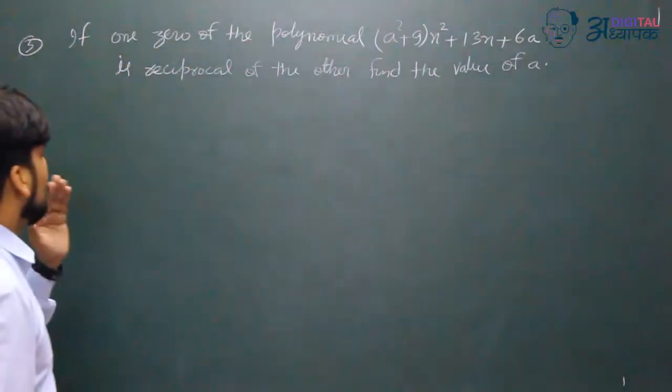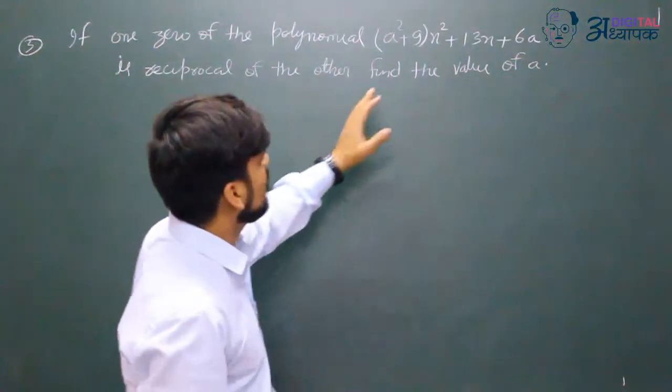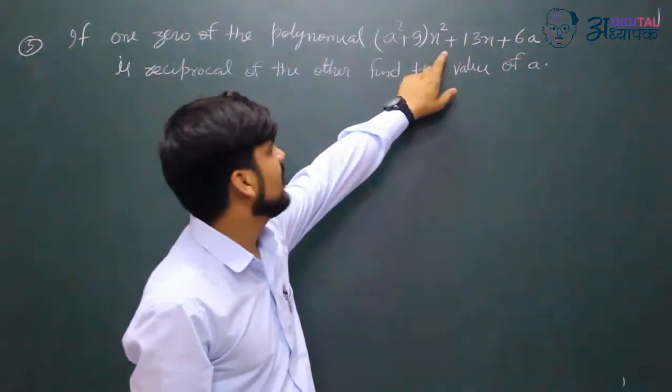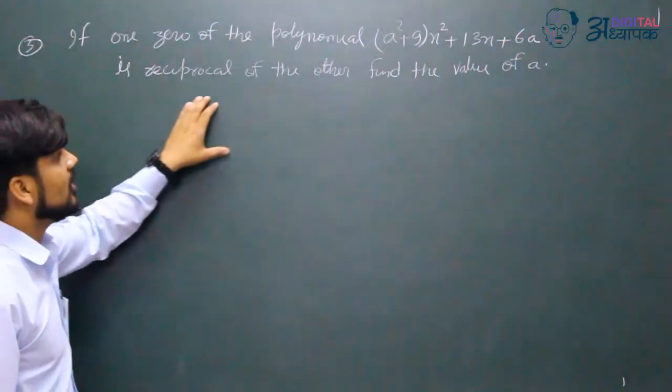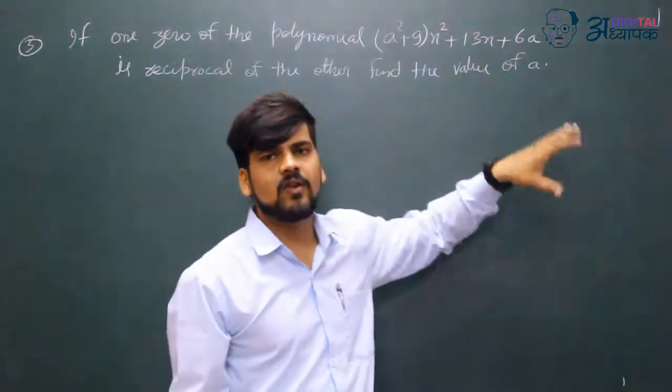Our question number 3 is: if one zero of the polynomial (a²+9)x² + 13x + 6a is reciprocal of the other, then find the value of a.